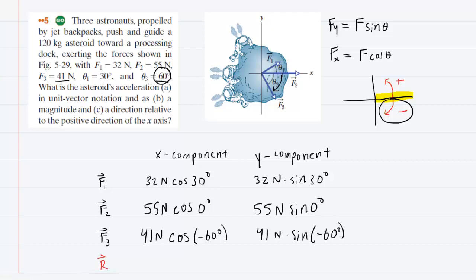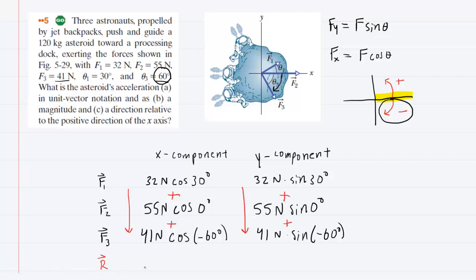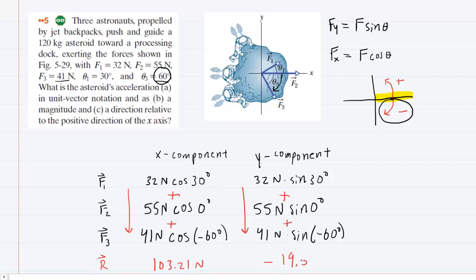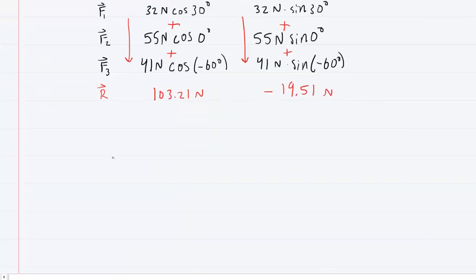Set your calculator to degree mode. Add all three X components to get the resultant X component, and add all three Y components to get the resultant Y component. In the X component, you should end up with about 103.21 newtons. In the Y component, you should have negative 19.51 newtons. Those are the components of the resultant force.